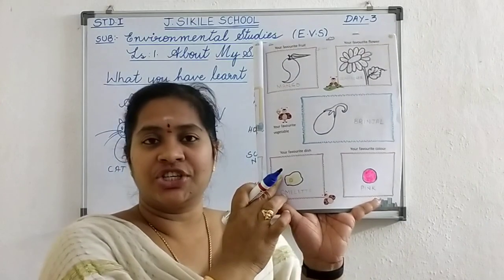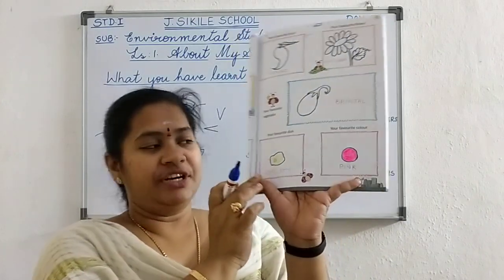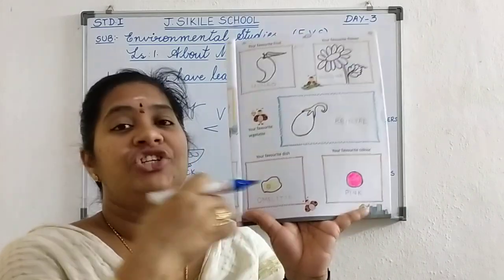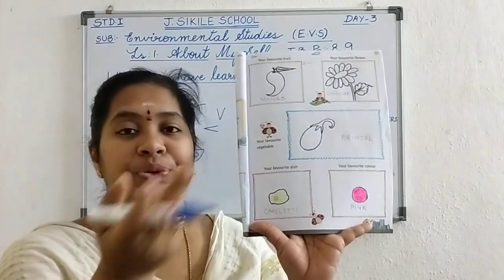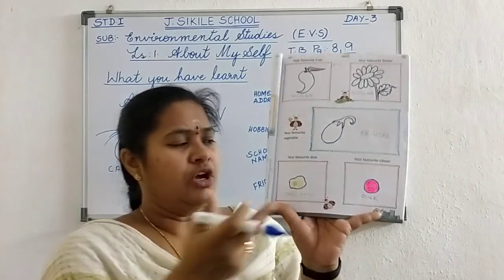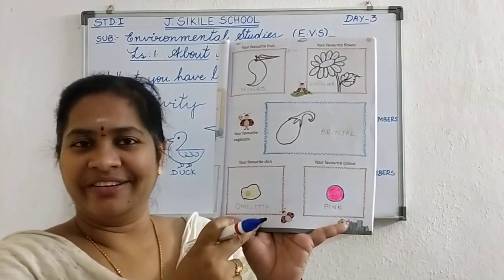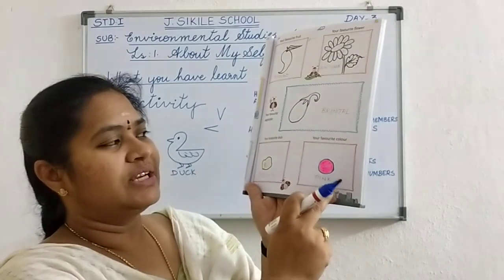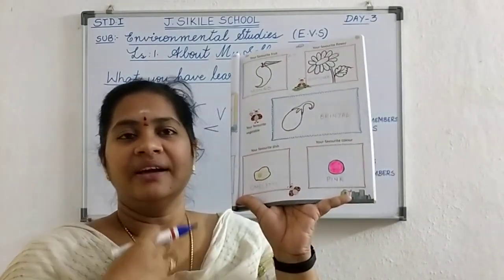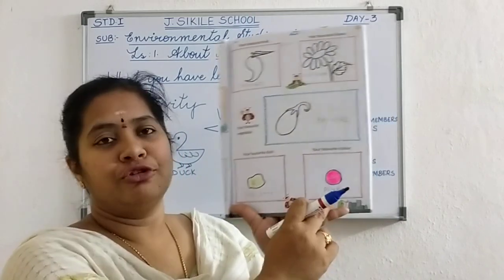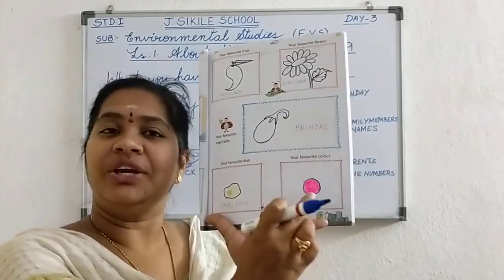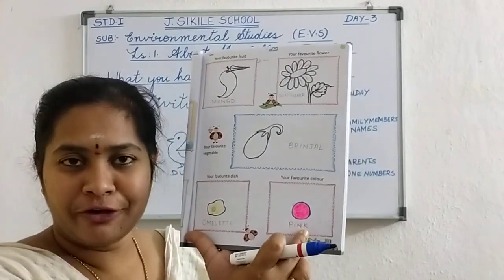My favorite dish — I have drawn an omelette here. Which dish do you like? Which one you like more, sweet or hot? You draw whichever dish you like. And next, your favorite color — I like pink. I like pink color, so I have drawn a pink color dot here. Which color you like, you can draw there.